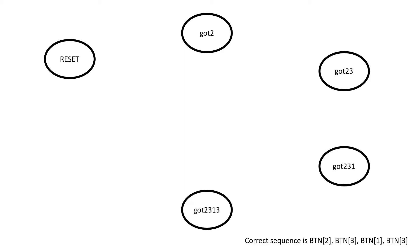Since this is a sequence detector, it's convenient to use a finite state machine to represent how this is going to look, and then it's going to help us code it. I chose to use a Moore machine. The correct button sequence is: button 2, button 3, button 1, then button 3, and then an enter button which is button 0. Depending on whether the sequence is correct or incorrect, it'll give a red light for incorrect, a blue light for correct, and if you have the speaker, it will output a tone.